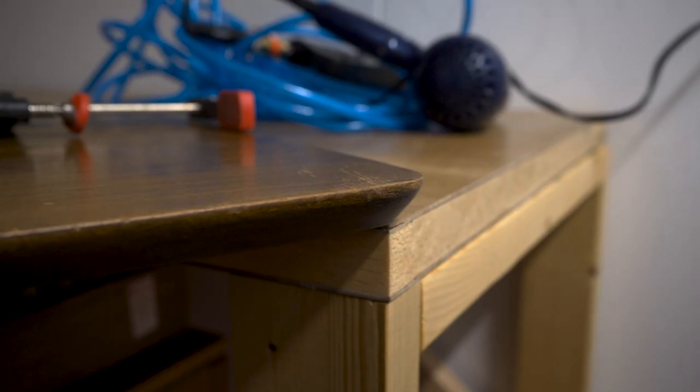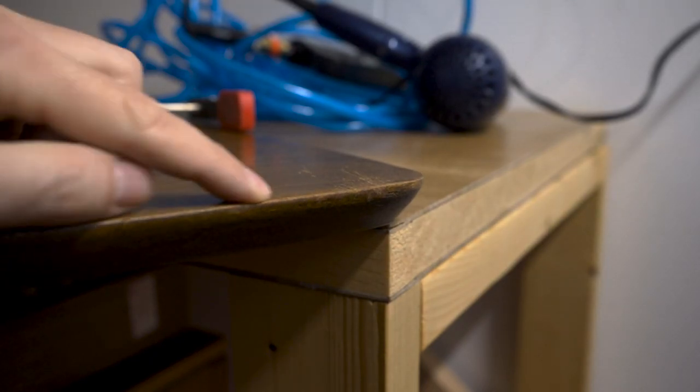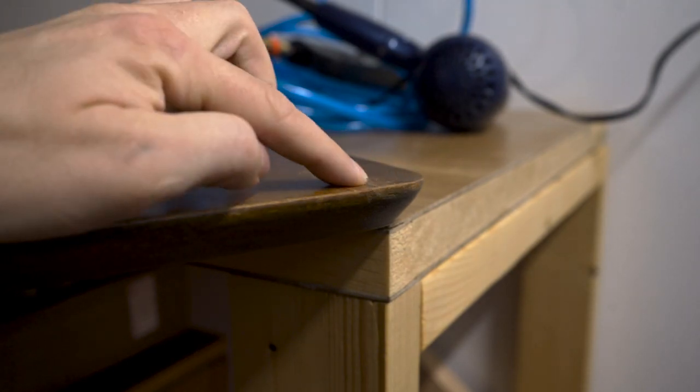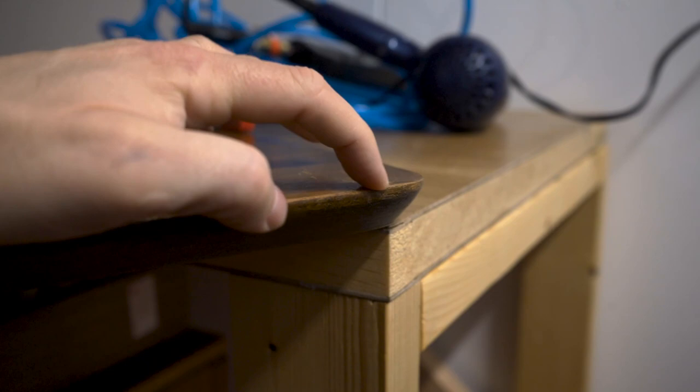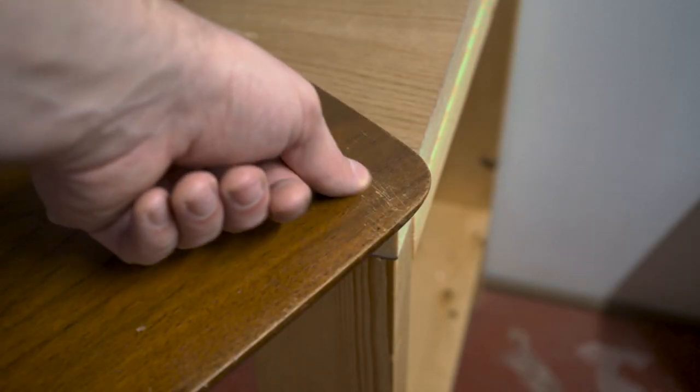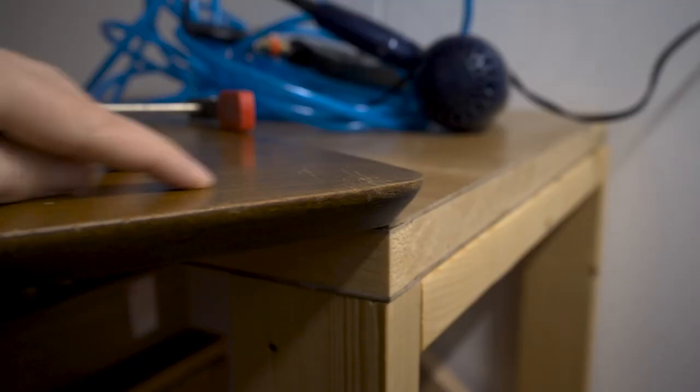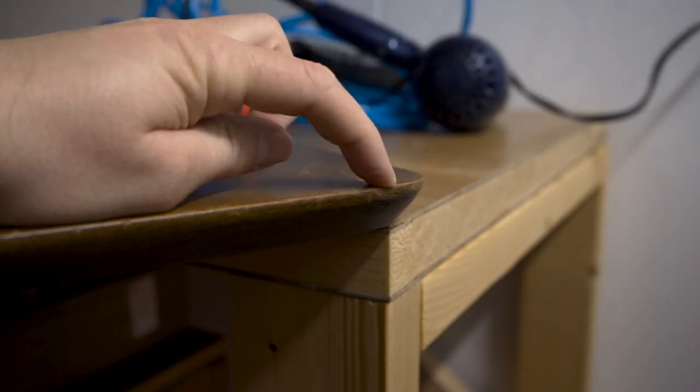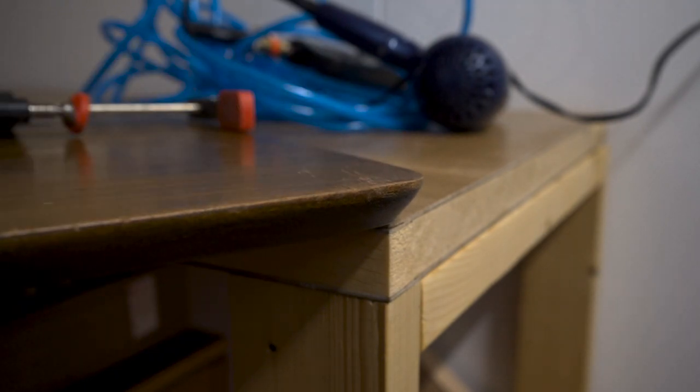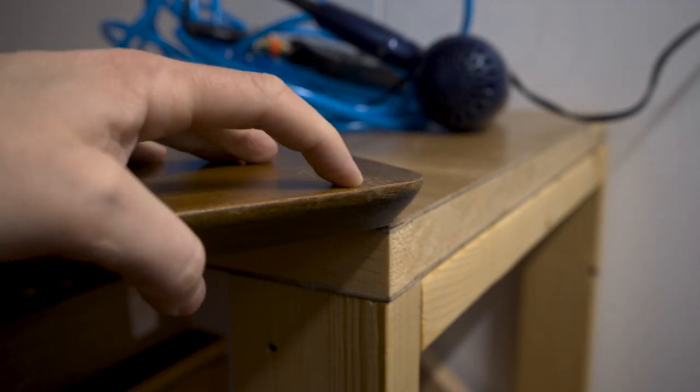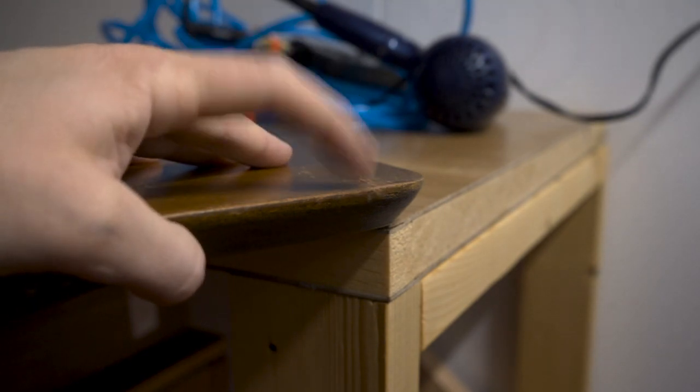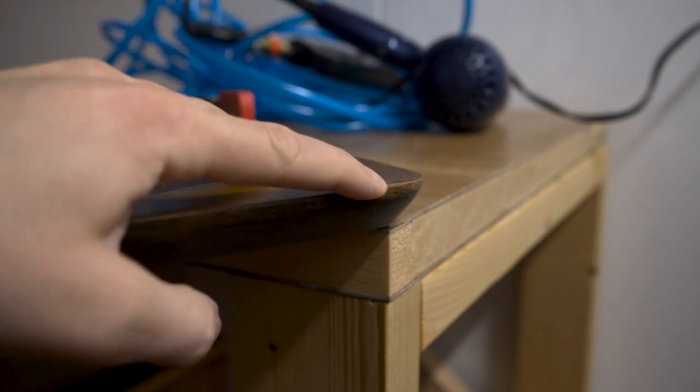Before I removed the finish on the top, I wanted to address this corner here. It may be hard to see in the video, but it looks like the table was dropped on that corner. There's also some damage to the finish in that corner. It made a little bump in the top, a raised spot. It was the kind of thing that was easier to feel with your fingers than actually see. But I wanted to try and fix that before I put the new finish on.